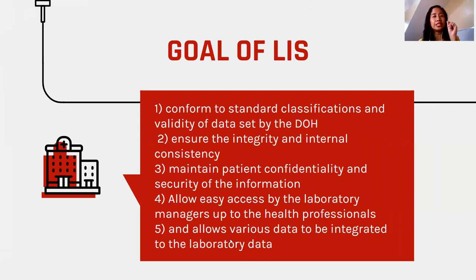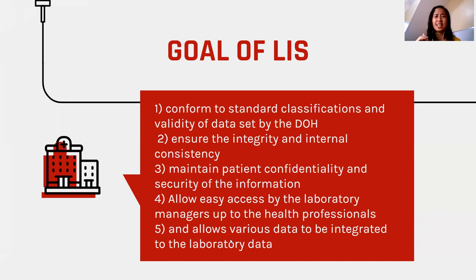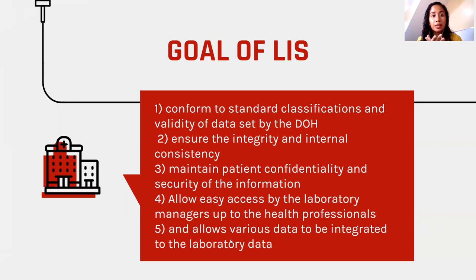Number two: ensure integrity and internal consistency — results must be within quality. Our previous topics covered data quality, so we must ensure consistency with our results. Number three: maintain confidentiality and security of information. In the laboratory, we keep highly sensitive information, especially from our blood bank, because we test for HIV, hepatitis B, STDs, and immunology — these are sensitive results we must protect.